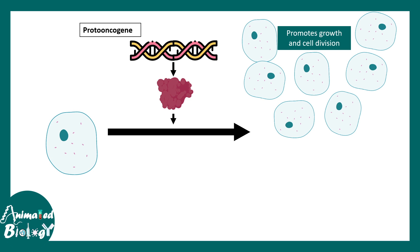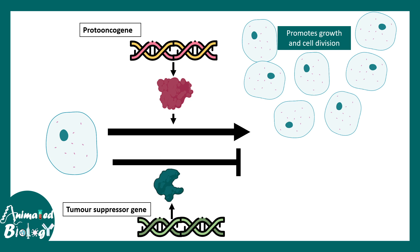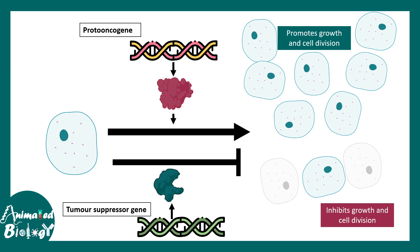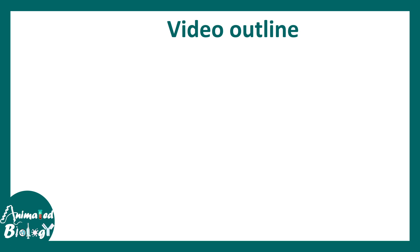Similarly, the tumor suppressor gene and its products suppress growth and division. An interplay between the proto-oncogene and tumor suppressor gene decides whether cancerous development can occur in the body. In this video we are going to understand this process in detail with examples and biological principles.